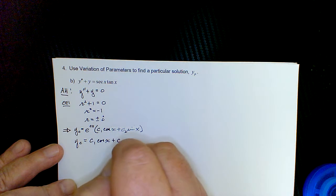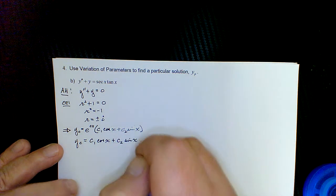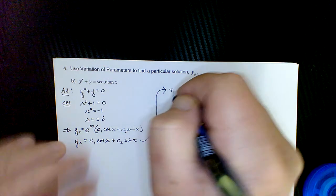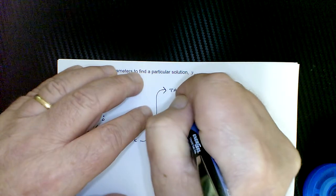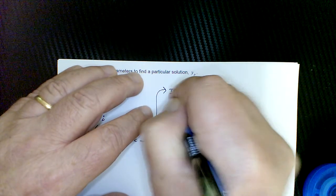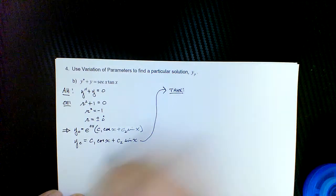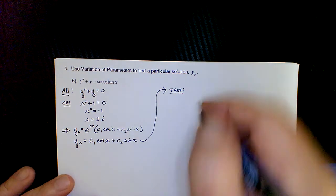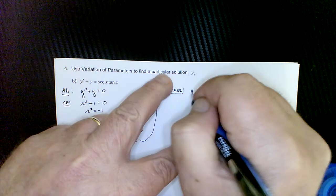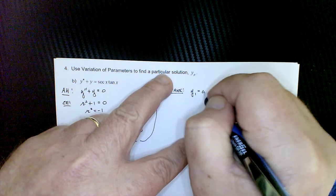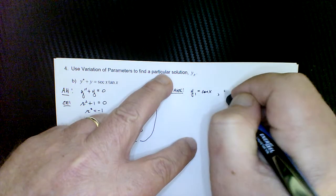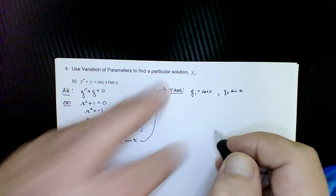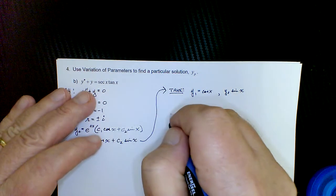In accordance with the theorem, this is of the form c1·y1 plus c2·y2. So we take y1 to be cosine(x) and y2 to be sine(x). Then we need the Wronskian of those two functions.